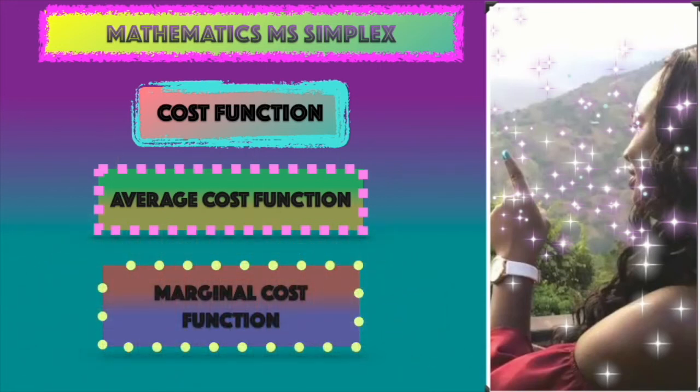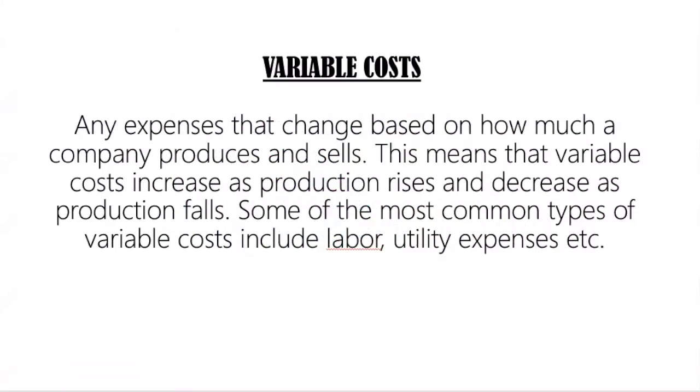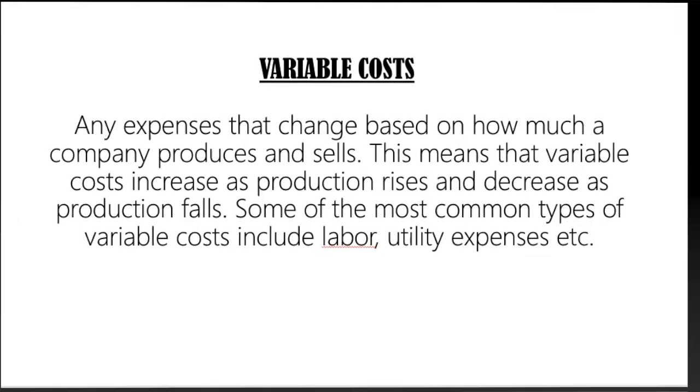Let's get started. When we talk about cost functions, we have to talk about variable costs where the expense of how much a company produces or sells varies. It can increase the cost based on production rising or decrease based on production falling. For example, labor and utility expenses. So variable costs fluctuate. They change based on whatever is happening.